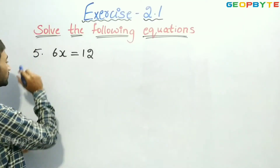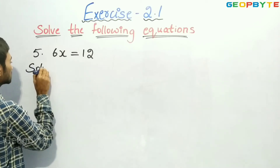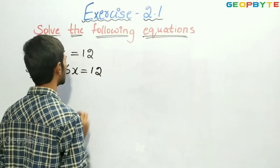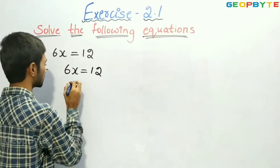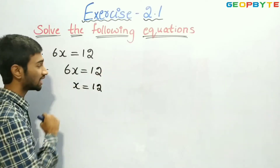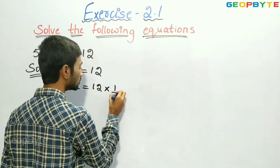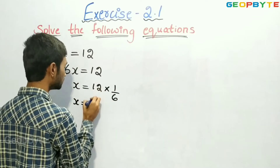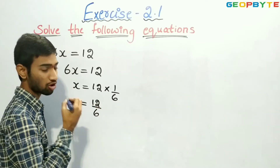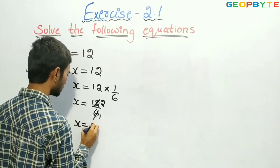Now let us see the fifth question: 6x is equal to 12. Let us write the given equation: 6x is equal to 12. Here we need to find the value of x. If we transpose 6 to the right-hand side, it will become reciprocal. So, reciprocal of 6 is 1 by 6. That is, x is equal to 12 into 1 by 6. Since 6 and 12 are multiples of 6, and 6 twos are 12, we got the value x equal to 2.